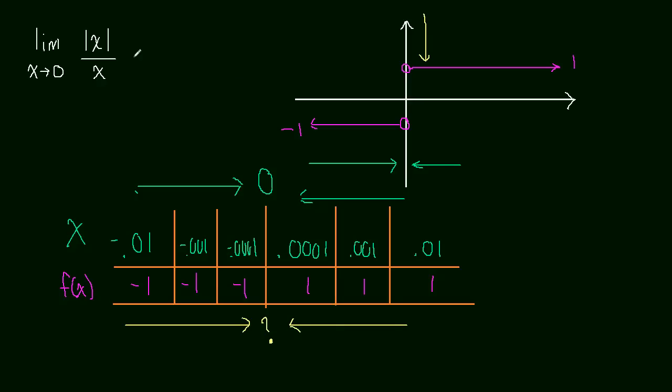So when that happens, we say this limit does not exist. We write it as DNE. It does not exist. So this limit, it's basically, you can think of it almost as undefined. There's no answer for this limit. The limit just doesn't exist.